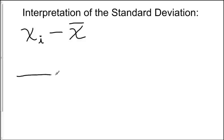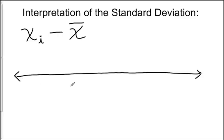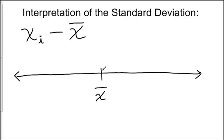If we have a data set where the values can be put onto a number line, and we have the middle of that data set being X-bar — the average or the mean — the average distance that any value would be from that point would be S, the standard deviation.